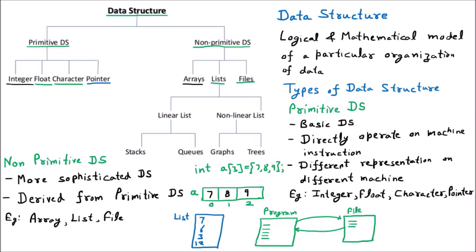So till now we have seen that data structure is of two types. One is primitive — basic, directly works on machine instruction, and has different representations on different machines — like integer, float, character, and pointer. The next type is non-primitive, which is derived from primitive data structures, such as array, list, and file.